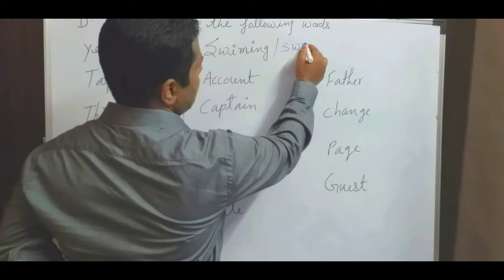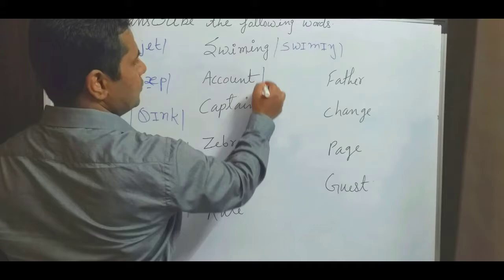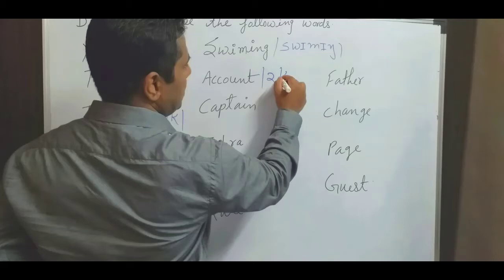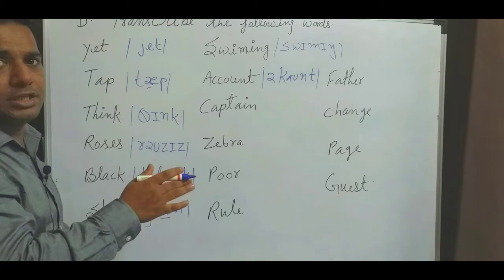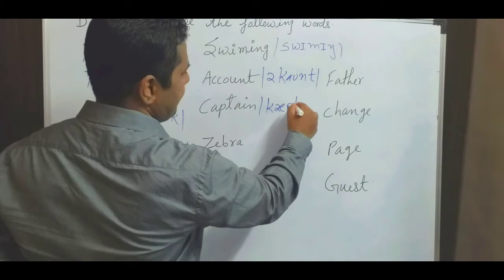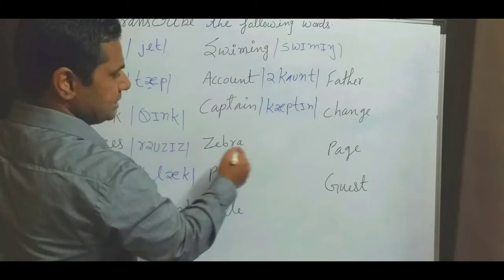Account - we don't say 'account', we say /əˈkaʊnt/. Captain - we don't say 'captain' with a full vowel, we say /ˈkæptɪn/, not 'turn' but 'tin'. Zebra.